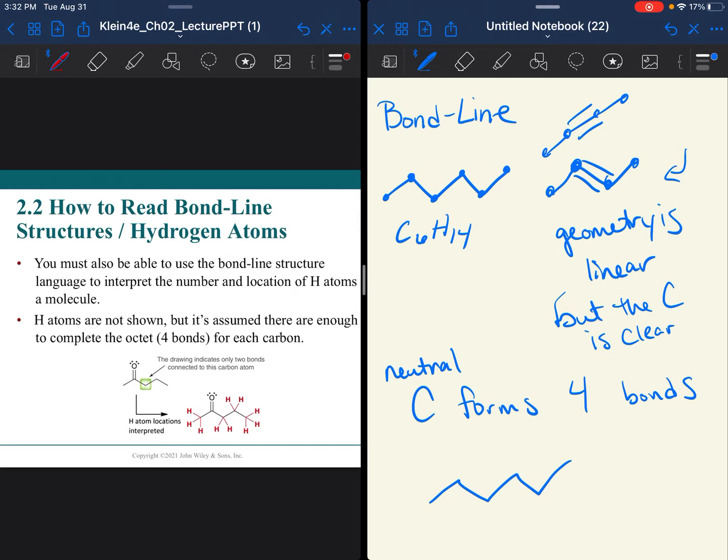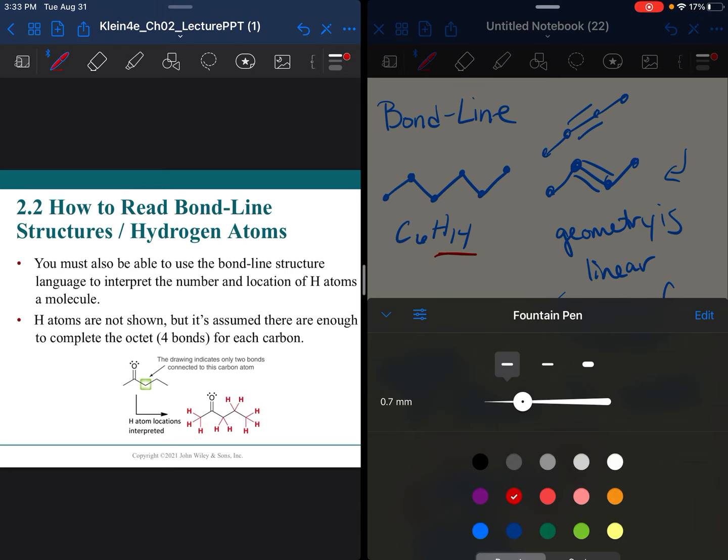For instance, looking at that hexane again, this carbon only has one bond, so we assume there are three hydrogens attached to it. The next carbon has two bond lines, so it would have two hydrogens. I'm going to draw a little red line to indicate where the hydrogens are. There would be three hydrogens, two, two, two, two, two, and then three. That adds up to fourteen hydrogens total.